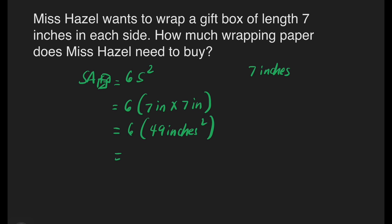Now, let's have 6 times 49. Okay, 49 times 6. 6 times 9 is equal to 54. 6 times 4 is 24 plus 5 is 29. So, we have 294 inches squared. And that is our final answer.